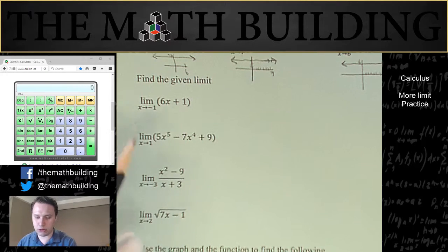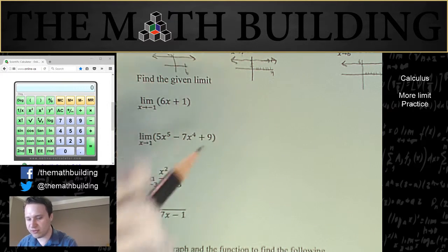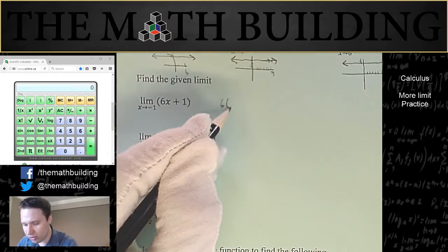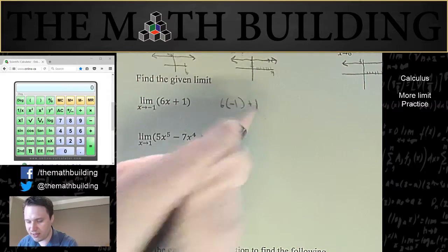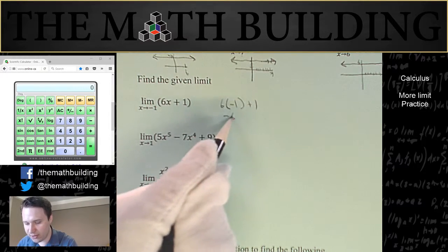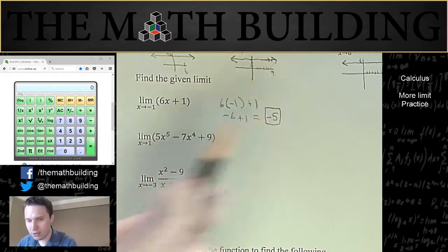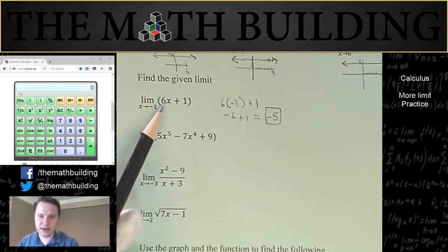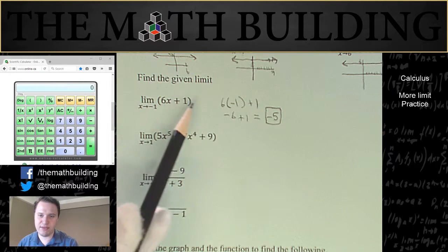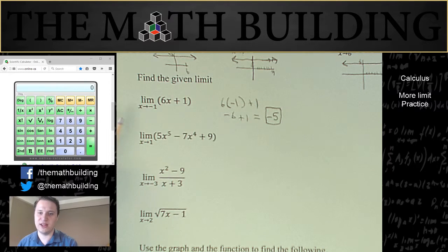So if that's the case, you have my permission to just plug in the number and see what it is. So because we know 6x plus 1 is well-behaved, let's just plug in negative 1. So 6 times negative 1 plus 1 is going to equal negative 6 plus 1 is going to equal negative 5. So that's going to be the limit for this function. It's going to be negative 5 because this is a well-behaved function, and it turns out that f of negative 1 equals the limit.